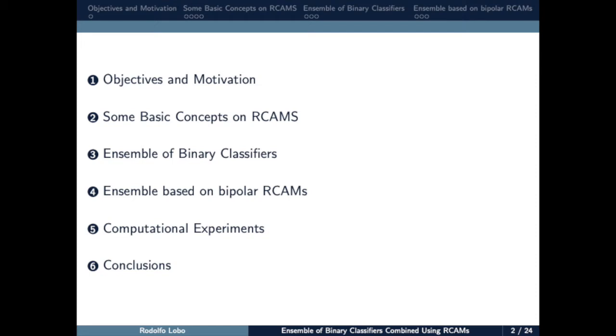This presentation is divided in six main sections. The first part is a brief introduction of this work, Motivations and Objectives. In the second part, we present some basic concepts on Recurrent Correlation Associated Memories. In the third part, we summarize the main ideas on binary classifiers. In the fourth part, we present the new model. The fifth part contains the computational experiment and preliminary results. And finally, the conclusions. So let's begin.